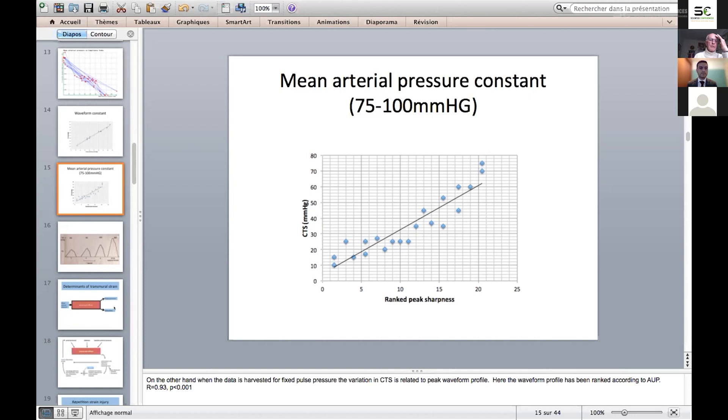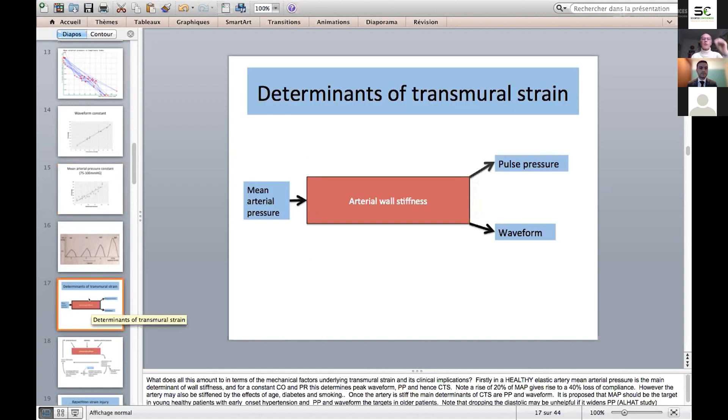It looks as though we have a rather complicated interplay here, in which the main determinants of arterial wall stiffness are pulse pressure and waveform. These are in turn determined by arterial wall stiffness, which in turn is determined by mean arterial pressure.